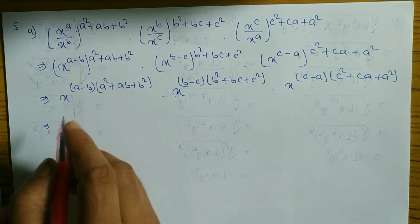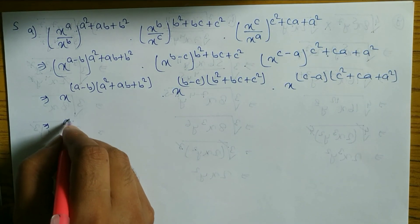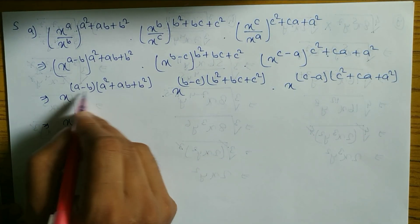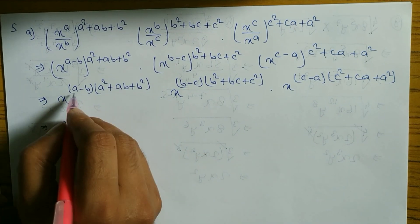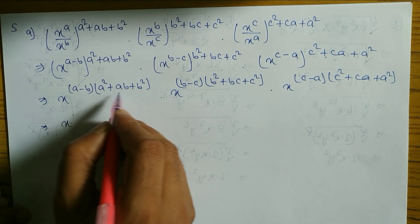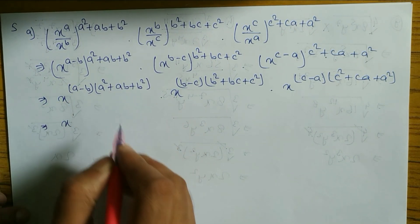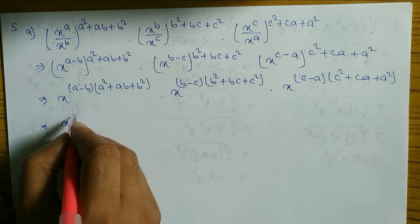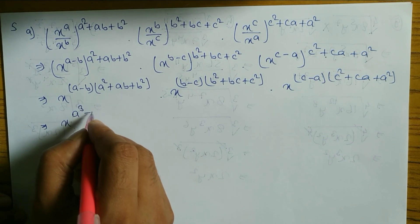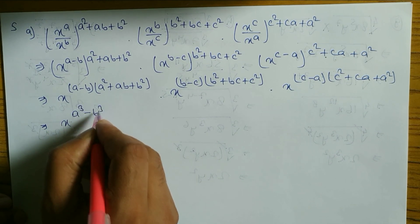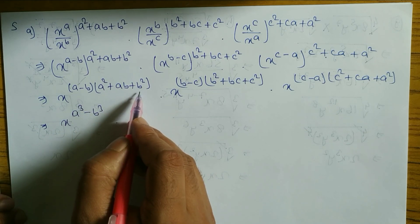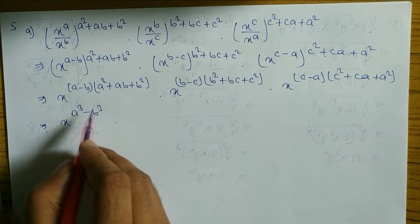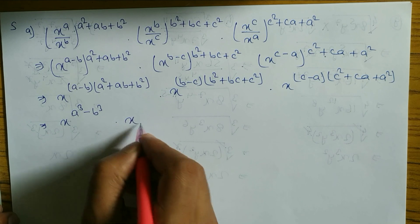Now after this you can see here. This is in the form of the formula: a minus b times a squared plus ab plus b squared. This is the formula of a cubed minus b cubed. So we can write a cubed minus b cubed, where a minus b times a squared plus ab plus b squared is the formula of a cubed minus b cubed.